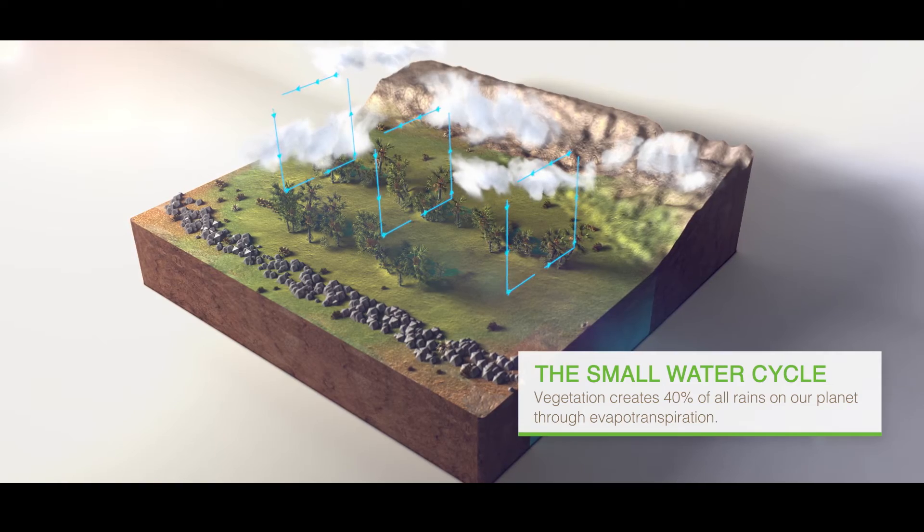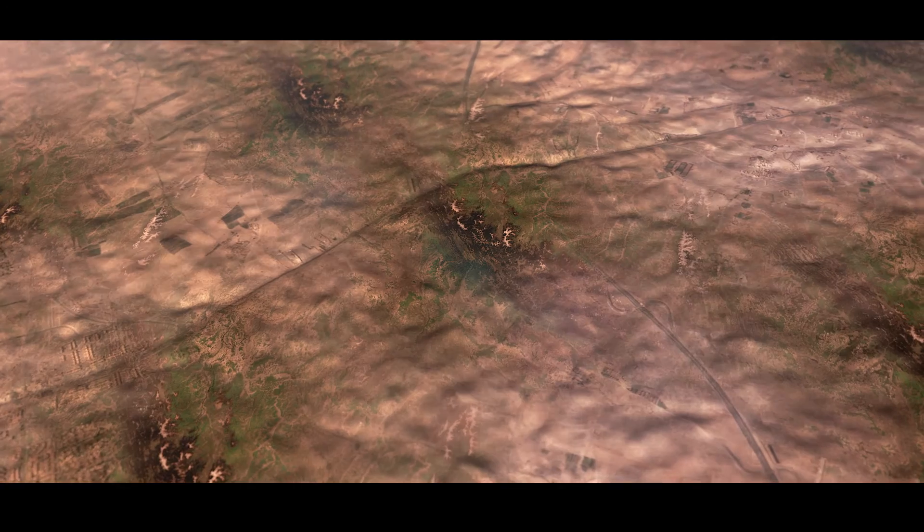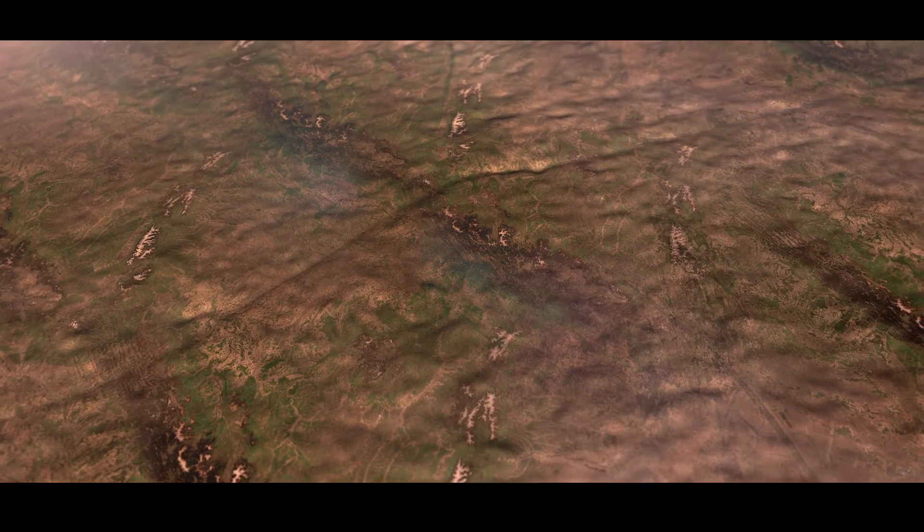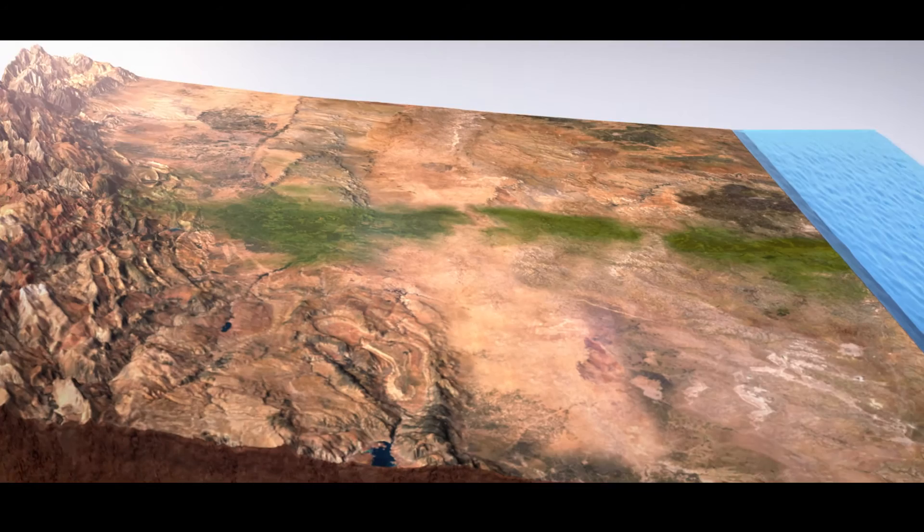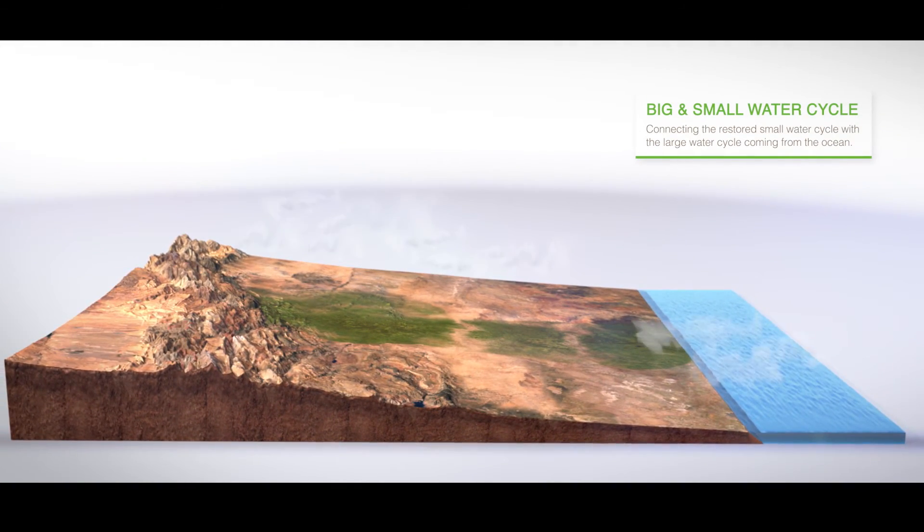As projects expand, the vegetation starts to grow towards each other, further repairing the water cycle within the designed areas of land. The large water cycle from the ocean starts interacting with the small water cycle again.